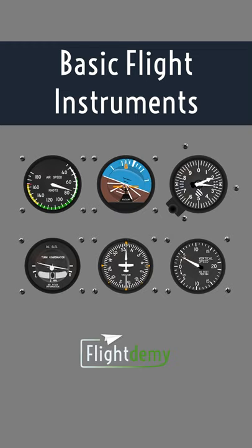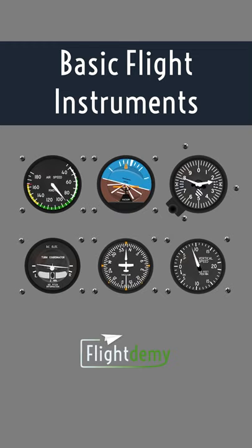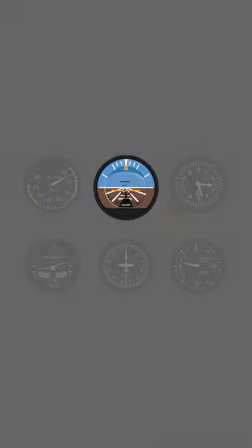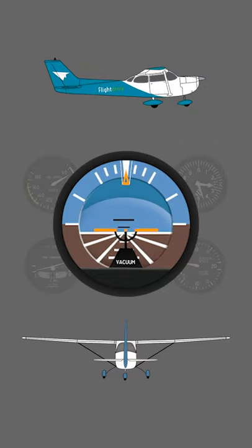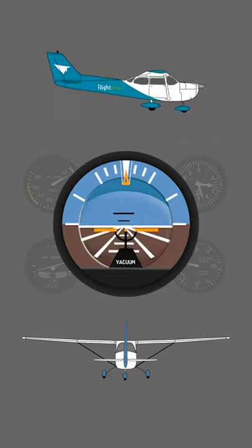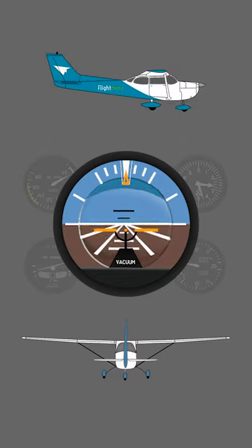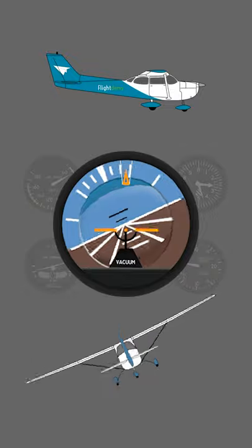These are the six basic instruments in an airplane. The attitude indicator or artificial horizon shows the plane's position with reference to the ground. In this way, we will know if the plane's nose is up, down, or if the plane is turning.